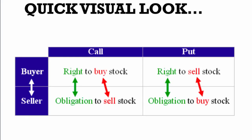A quick visual look — this will help you understand. You have the buyer and the seller on the left side in calls and puts. Remember that buyers have the right to buy the stock; a seller has the obligation to sell the stock to the buyer. Same thing on the put side: the buyer has the right to sell the stock and the seller has the obligation to buy the stock on that particular side. Pause this video and print this slide out — it will be a really great help and visual aid as you keep going forward.